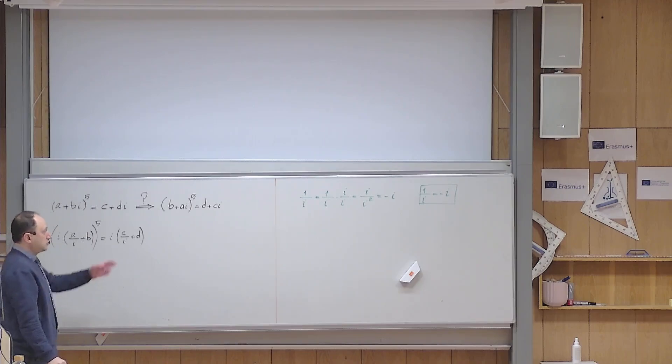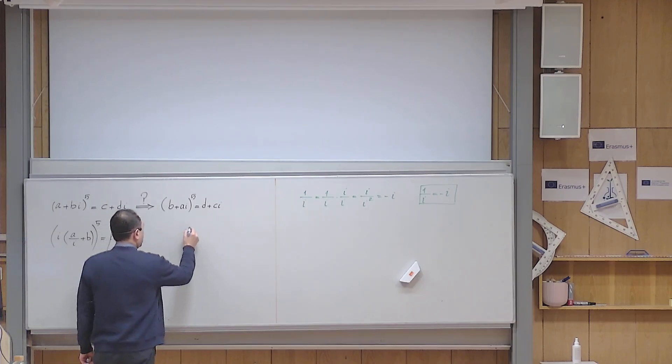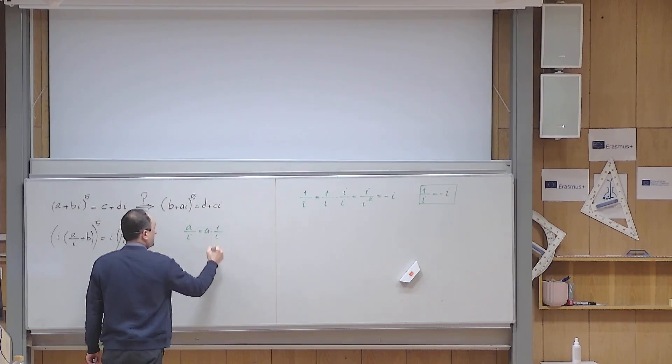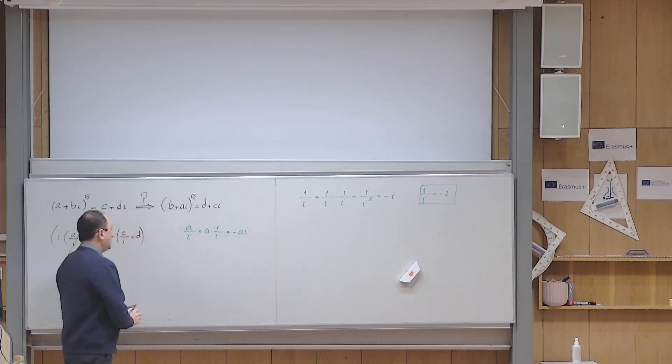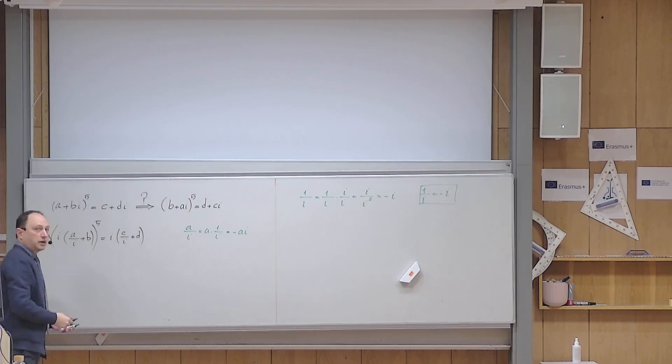Okay, but as I told you, a over i can be viewed as a times 1 over i, but 1 over i is negative i, so it becomes negative ai. And the same is true for c over i—it becomes negative ci.